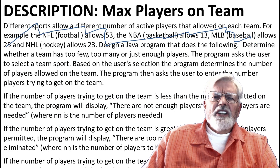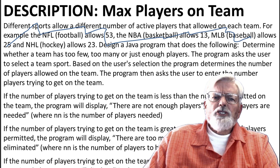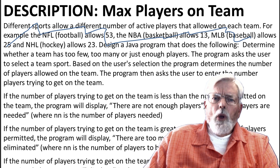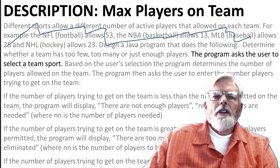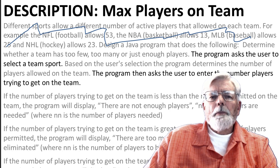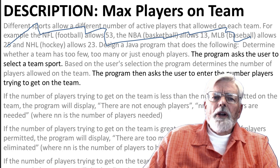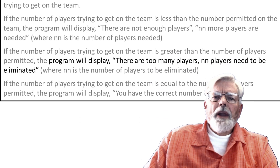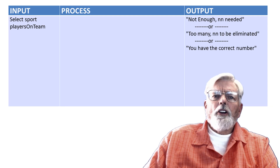Word problems can get scary when you first look at them. Some of the information is just background information that we don't actually need in the program. Let's skip over the general description and get to the specifics. We need to first identify the program's inputs and outputs. Inputs: select a team sport, and number of players trying to get on the team. Outputs: not enough players, too many players, or you have the correct number of players. This is the hierarchical input, process, output chart, also called a HIPO chart.